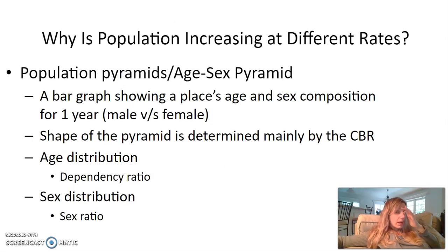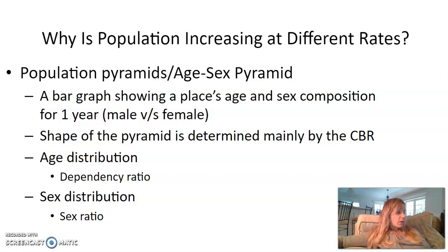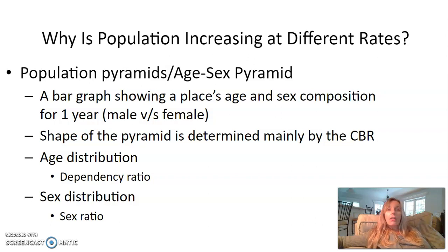Why is population increasing at different rates? Population pyramids are also called age-sex pyramids. This is really a bar graph — a series of bar graphs — showing a place's age and sex composition for one year. It's a one-year snapshot of the population of a country comparing male versus female for a given age cohort group.